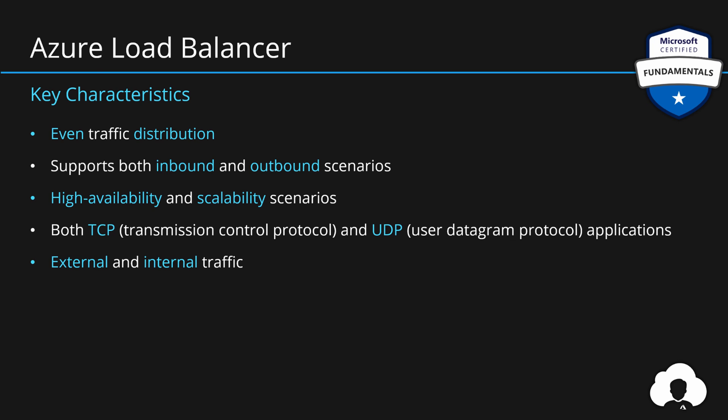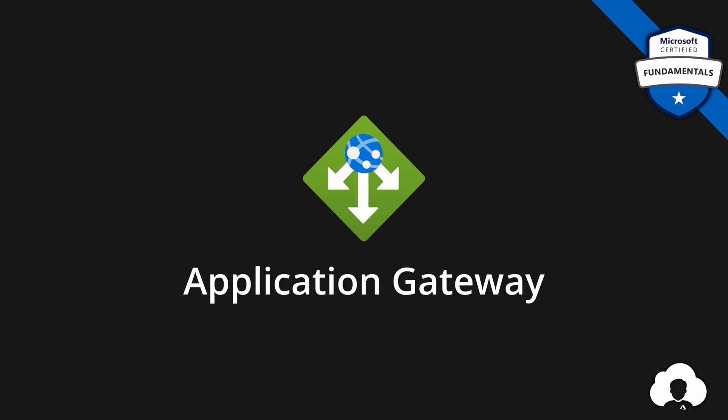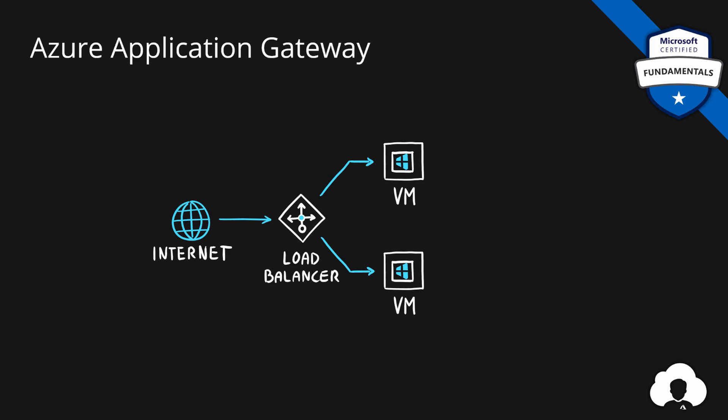Azure Load Balancer is not the only traffic distribution service in Azure. The next one is Application Gateway. If we are talking about traffic distribution for resources where that traffic is web traffic — HTTP traffic — you will usually want to replace a load balancer with Application Gateway. This is because Application Gateway is still a traffic distribution service, but it is designed to support web traffic, so it has more features that allow customers to better manage their web traffic.